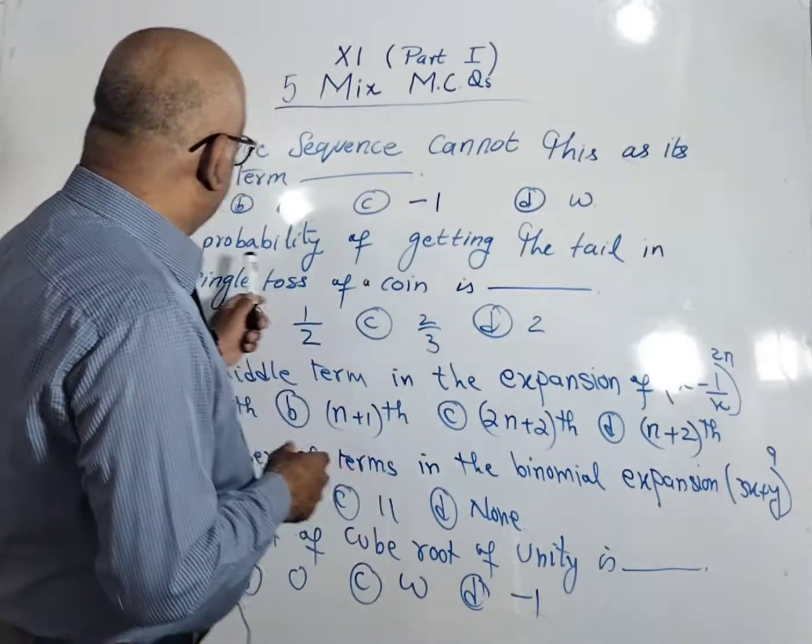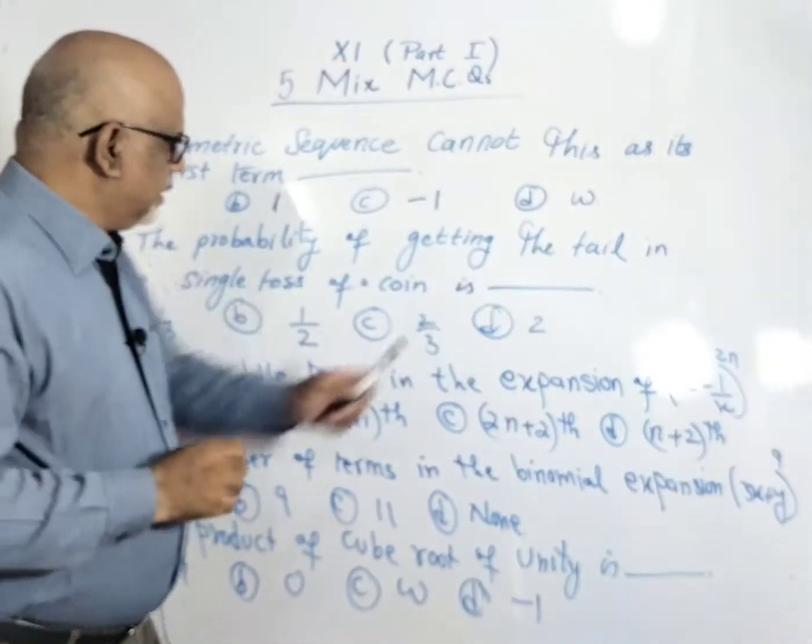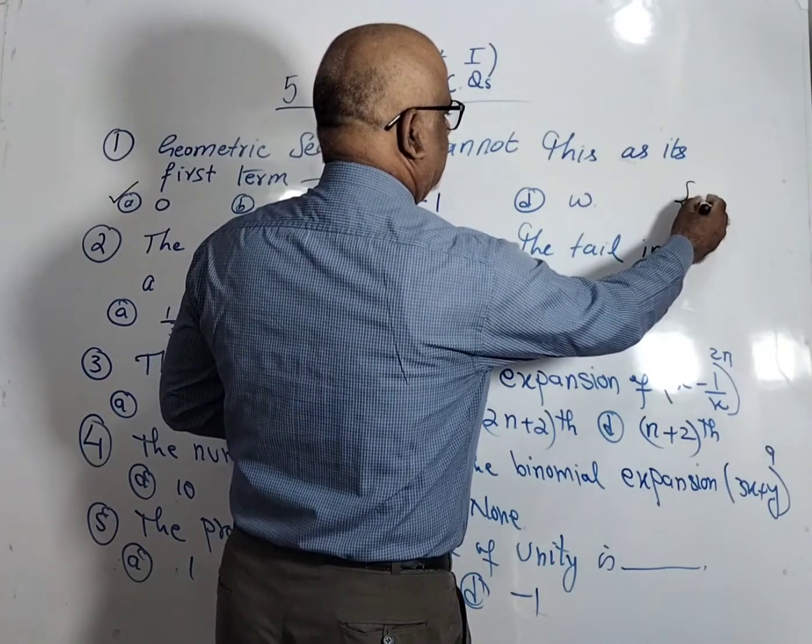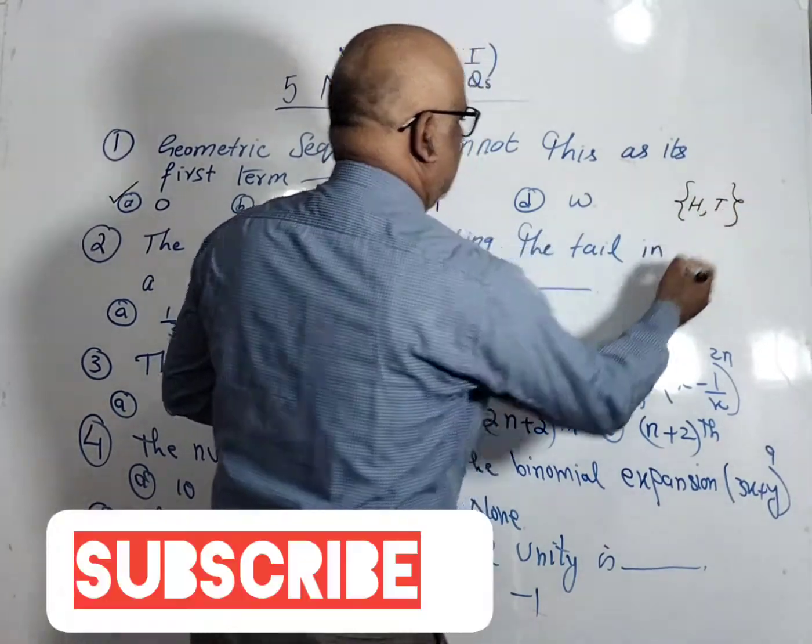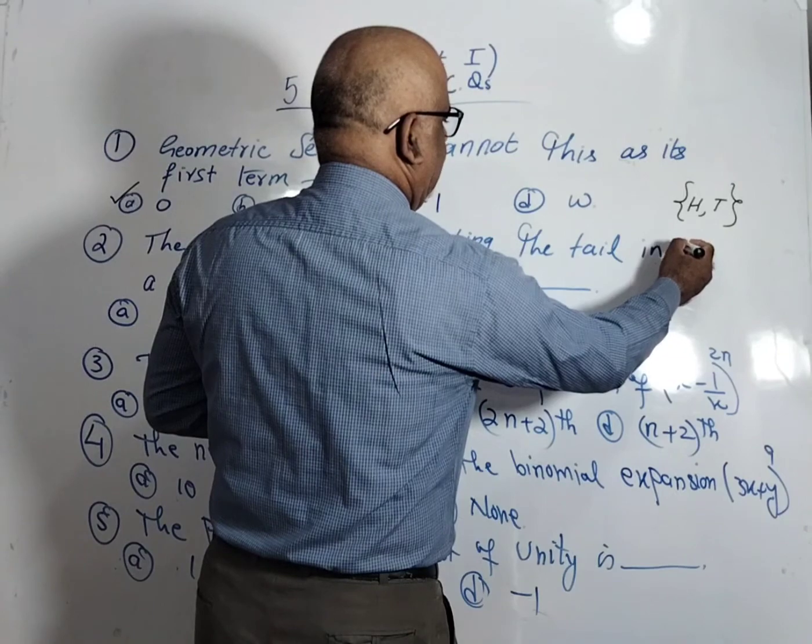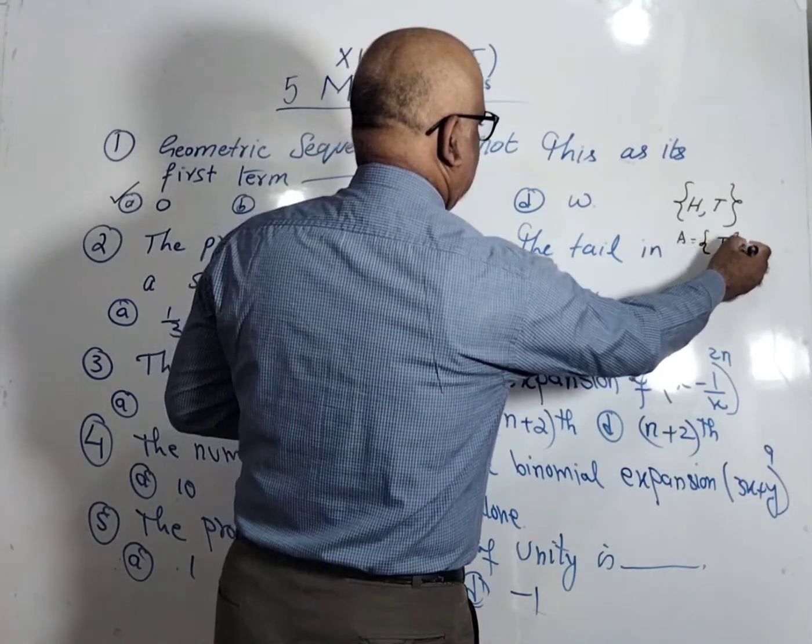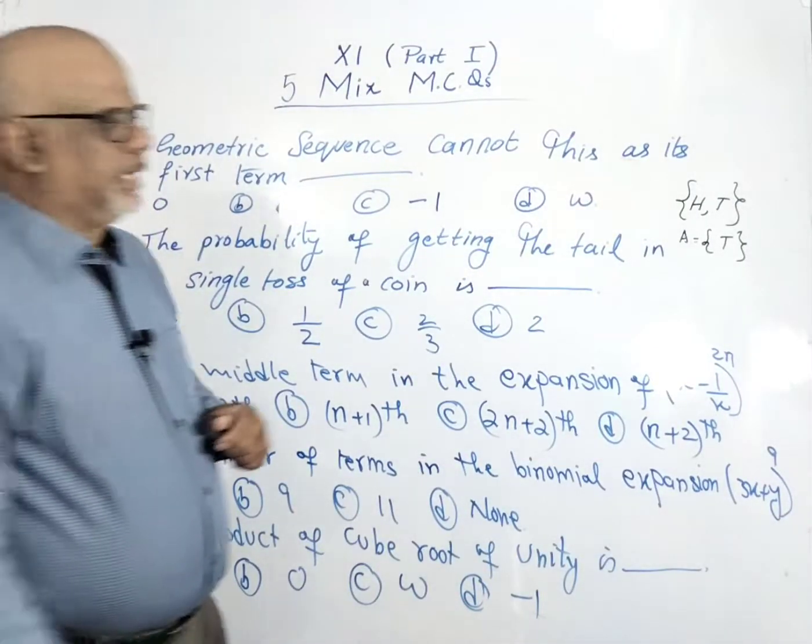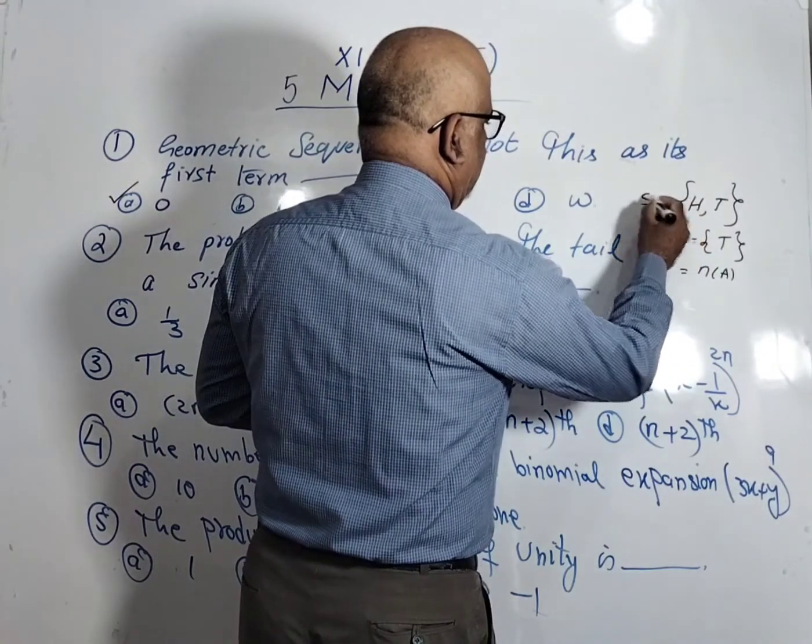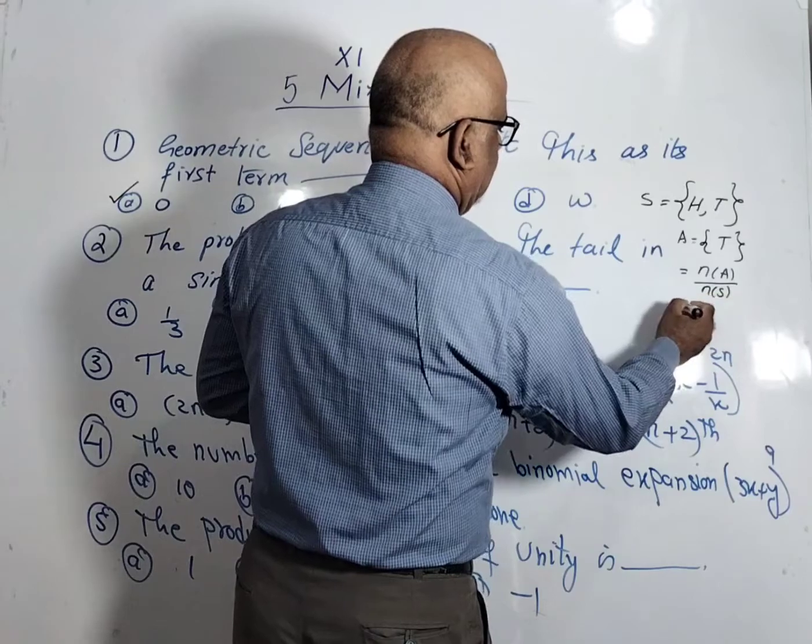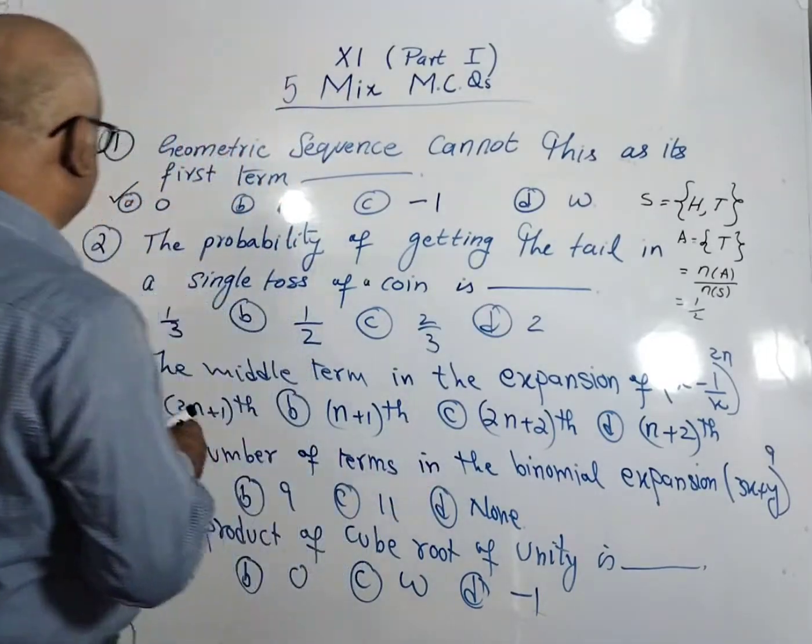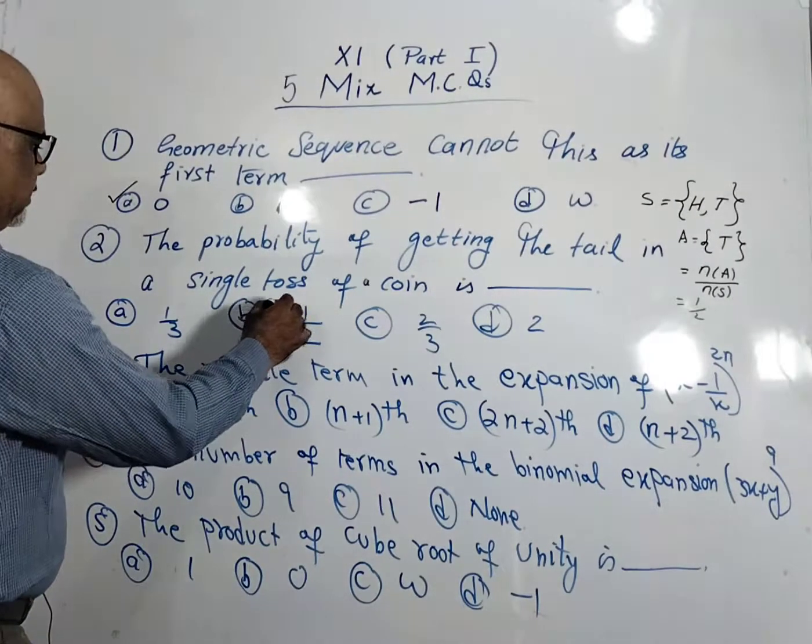The probability of getting the tail in a single toss of a coin. If we toss a coin, it is possible head or tail can come. So this will be the universal set here. The event is we have to find out the probability of event. So here we have a simple formula: the probability of an event divided by the probability of a sample space. So here one upon two. So one upon two is the correct option in the second MCQ. So the B option is correct here.